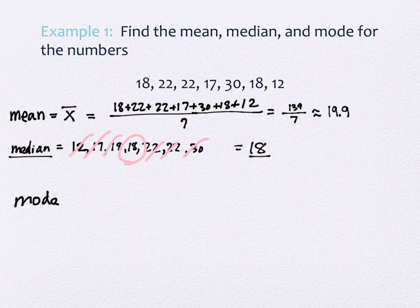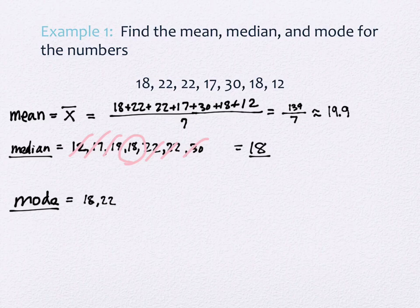Mode is the number or numbers that occur most frequently. In this data set, it's 18 and 22 - we would call that bimodal. If all values occurred the same number of times, we would say there's no mode. There's always a mode unless they all occur an equal number of times.